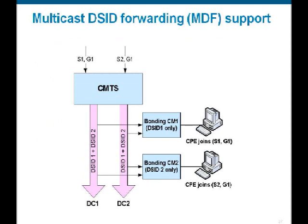As a pictorial example: DC1 and DC2 represent two downstream channels combined into a bonding group, with two source-specific multicast groups — S1,G1 and S2,G1 — represented by downstream service identifiers DSID1 and DSID2. The CPE behind CM1 is interested only in the first multicast stream and tunes using DSID1. The second CM tunes only to DSID2, even though both streams are available in the bonding group — the CM only receives and forwards what its CPE requires.